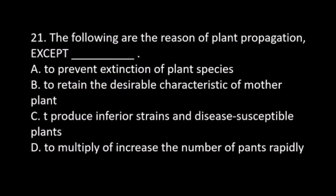Number 21. The following are reasons for plant propagation, except: A. To prevent extinction of plant species. B. To retain the desirable characteristics of the mother plant. C. To produce inferior strains and disease-susceptible plants. D. To multiply or increase the number of plants rapidly. The answer is C. To produce inferior strains and disease-susceptible plants.